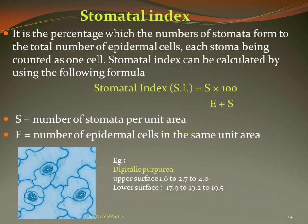Stomatal index is the percentage which the number of stomata forms to the total number of epidermal cells, each stoma being counted as one cell. It is calculated by the formula: S × 100 ÷ (E + S), where S equals number of stomata per unit area and E equals number of epidermal cells in the same unit area. For example, the stomatal index of Digitalis purpurea is 1.6–4 on the upper surface and 17.9–19.5 on the lower surface.